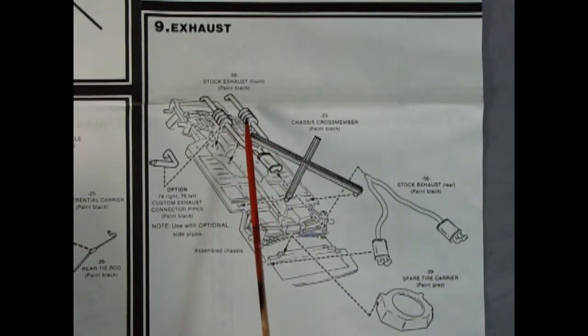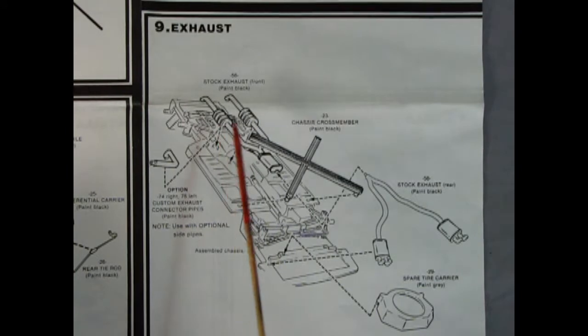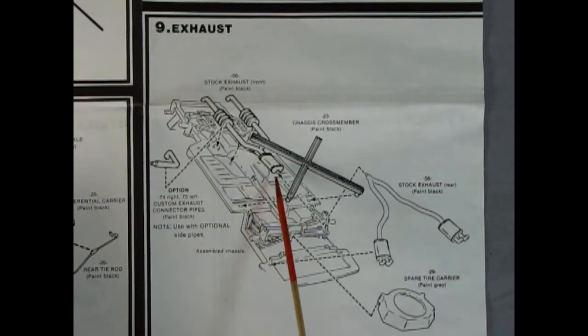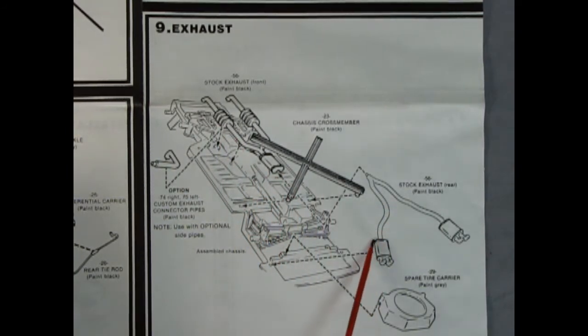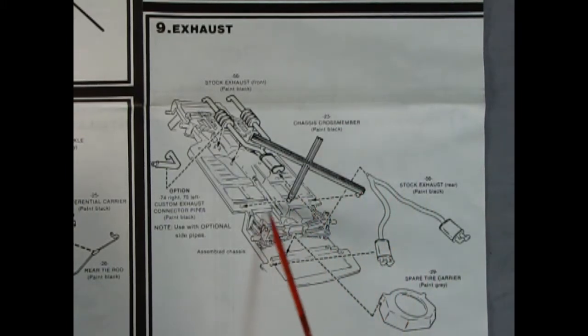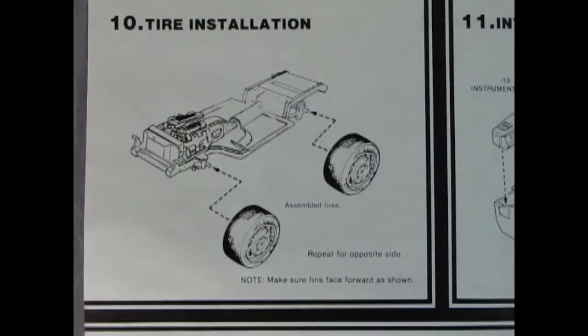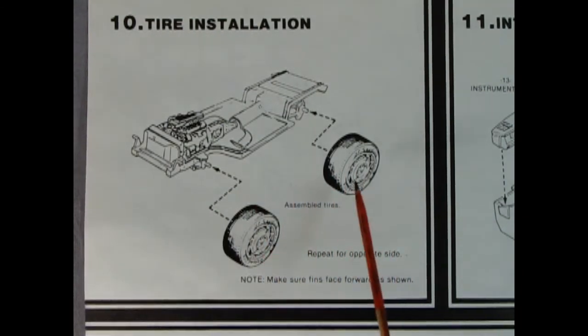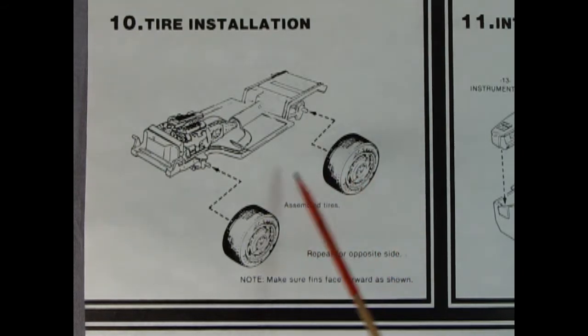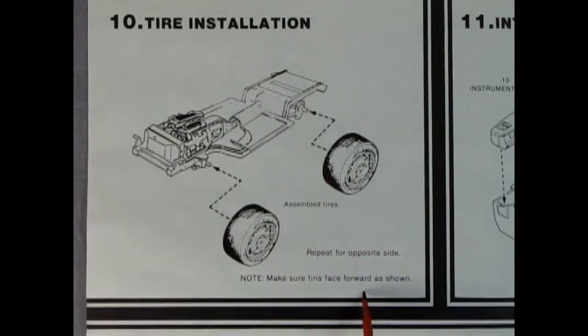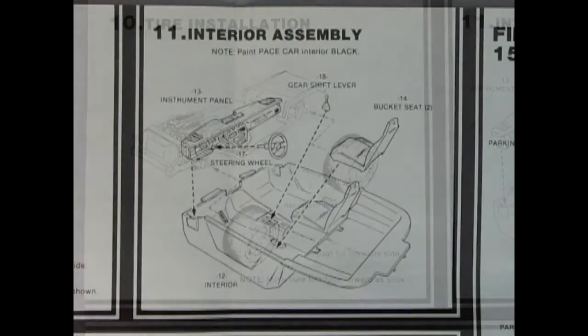Panel nine shows our exhaust system being put in place. We've got our stock factory exhaust pipes with the catalytic converter in the middle, then our extensions off the back with dual mufflers and dual little pipes off the back. We've got our chassis cross member going on top of all that and our spare tire carrier being glued onto the back. Panel ten shows our tire installation going on. Always remember the way the wheels are going - the little blades pointing forward. It says make sure fins face forward as shown.